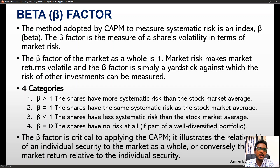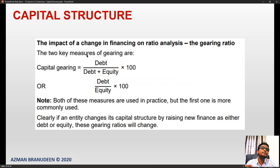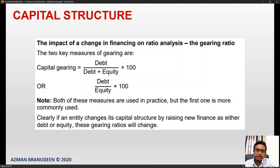The beta factor is critical to applying CAPM. It illustrates the relationship of an individual security to the market as a whole. When we change the financing structure or gearing ratio, the two key measures of gearing become very important. Even in pre-seen analysis we try to determine capital structure. Capital gearing is equal to debt over debt plus equity, or debt over equity.